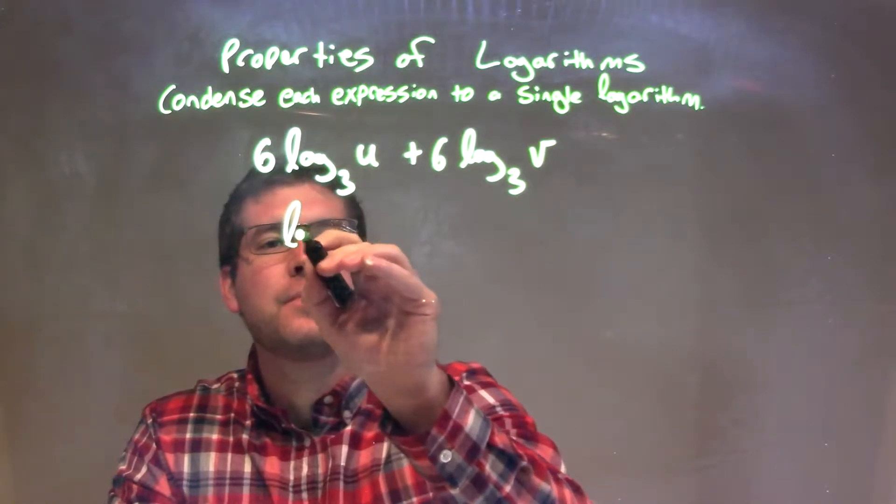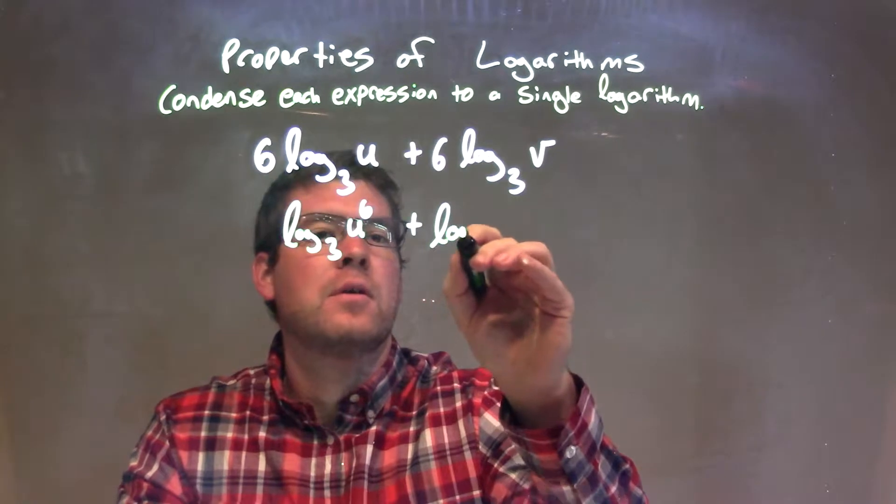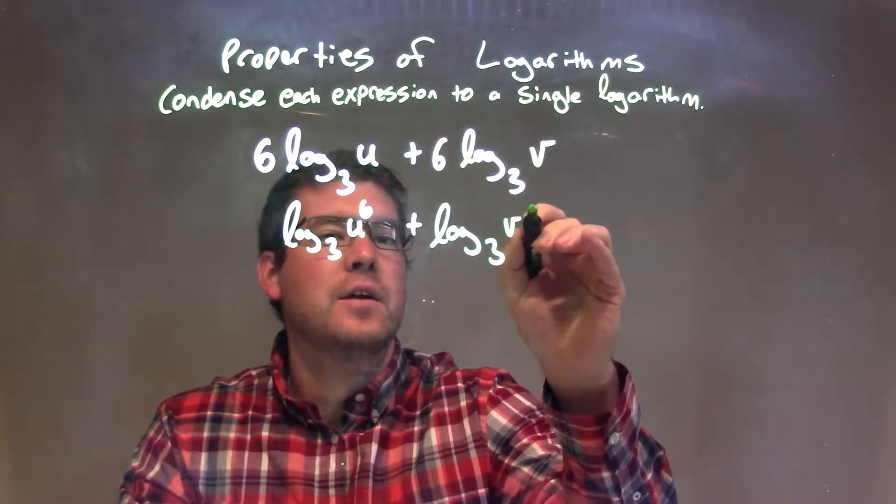So we have log base 3 of u to the 6th power now, plus log base 3 of v to the 6th power.